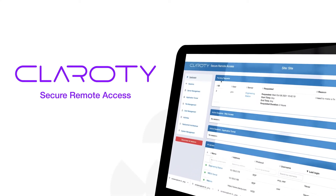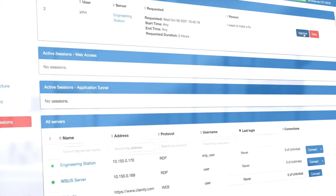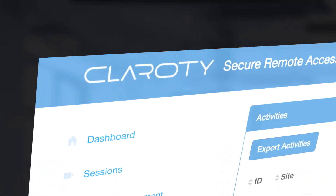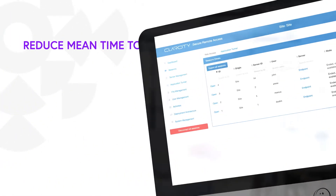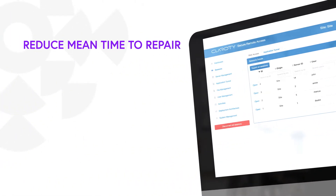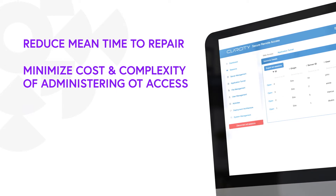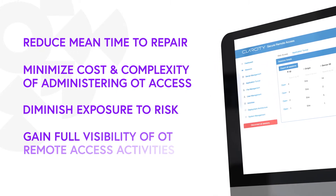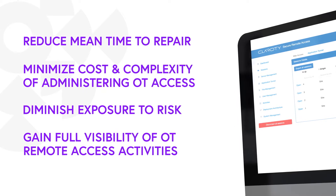There is a simplified, purpose-built, and highly secure approach to OT remote access. Clarity Secure Remote Access SRA reduces mean time to repair by making it faster and easier for users to safely connect to and troubleshoot industrial assets whenever necessary and from any location.